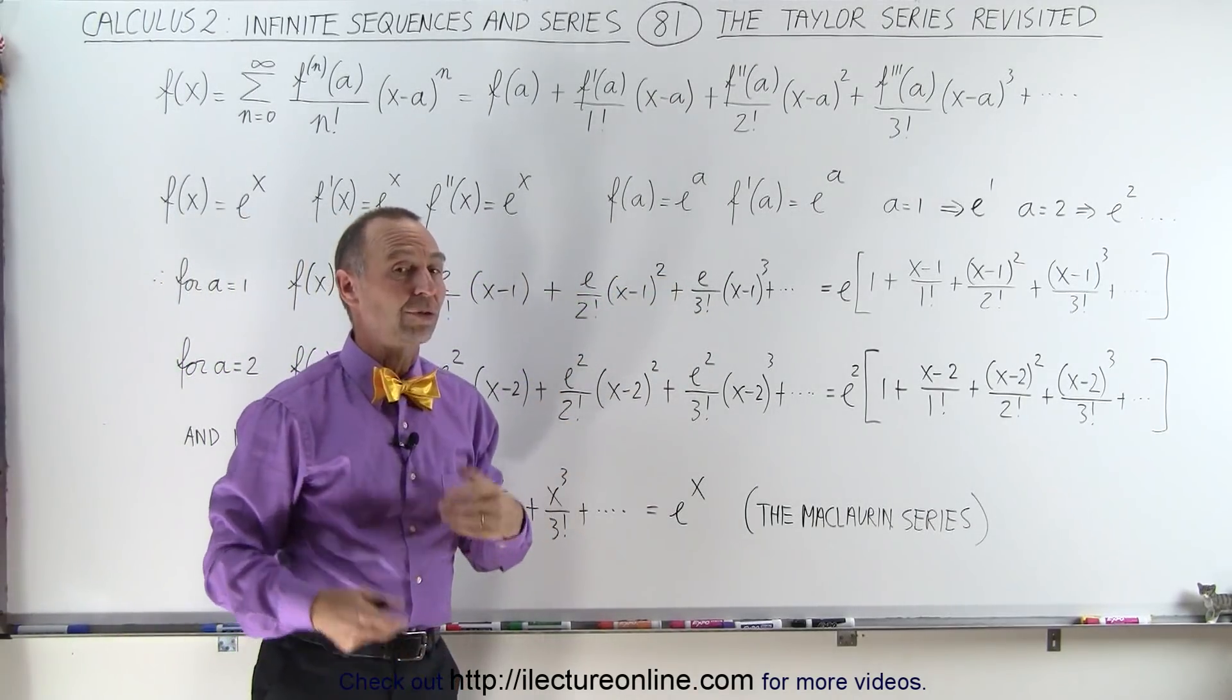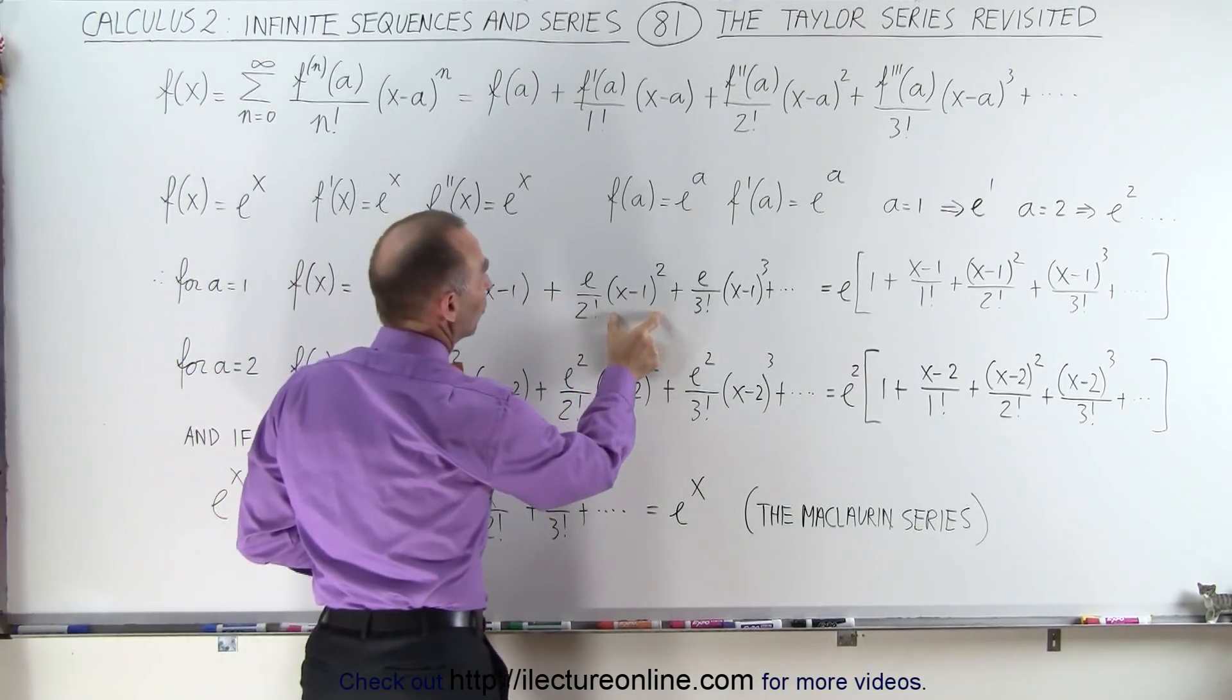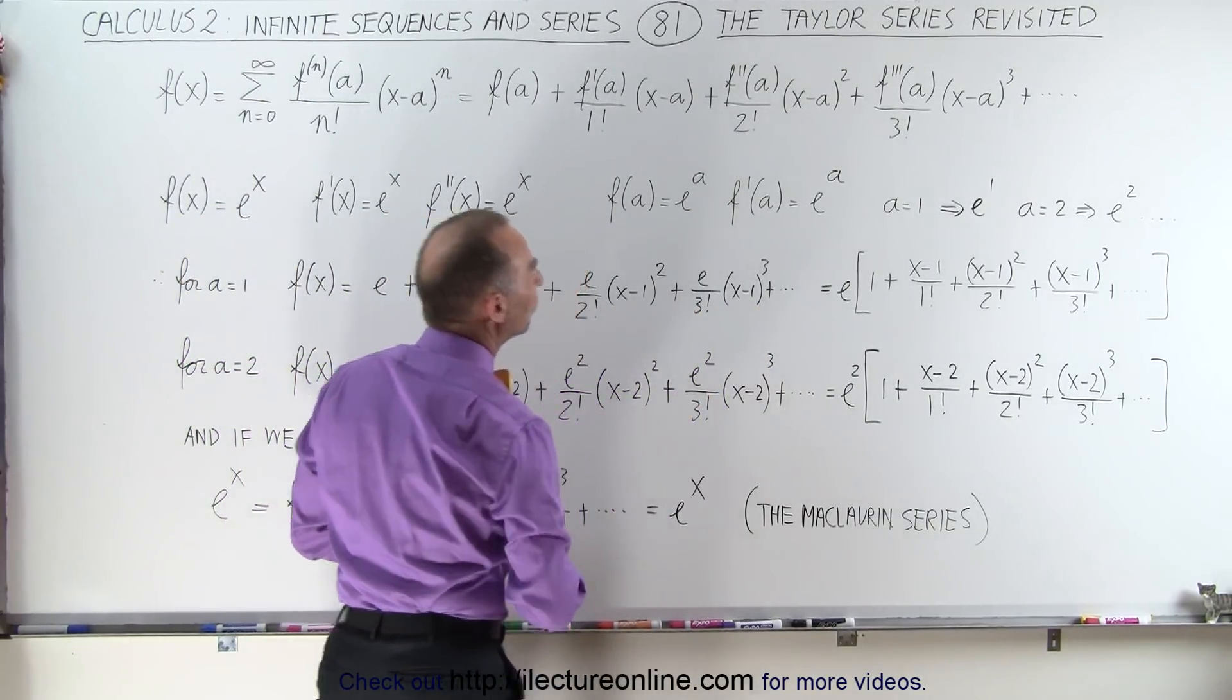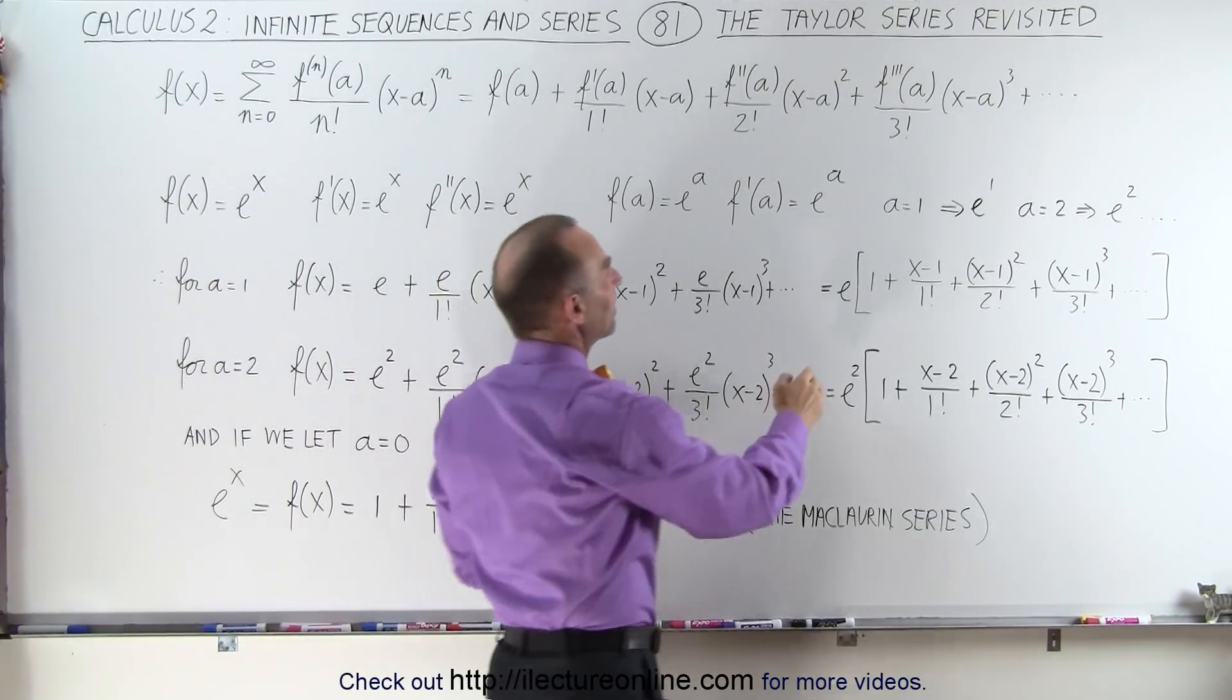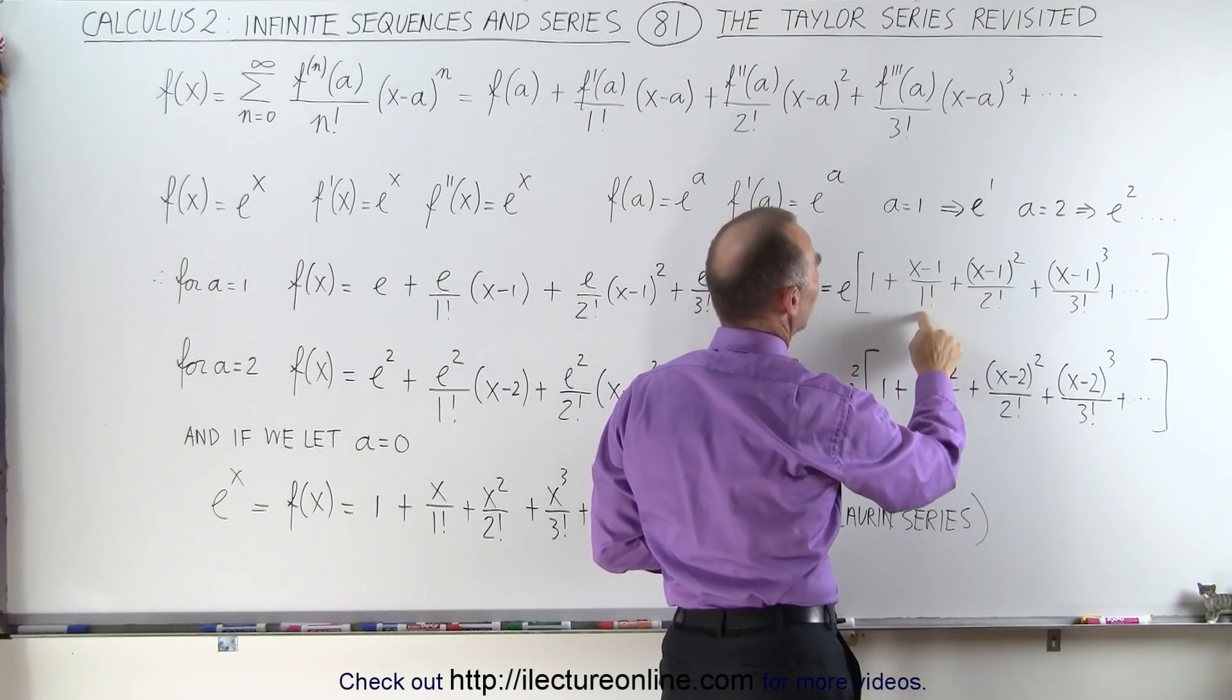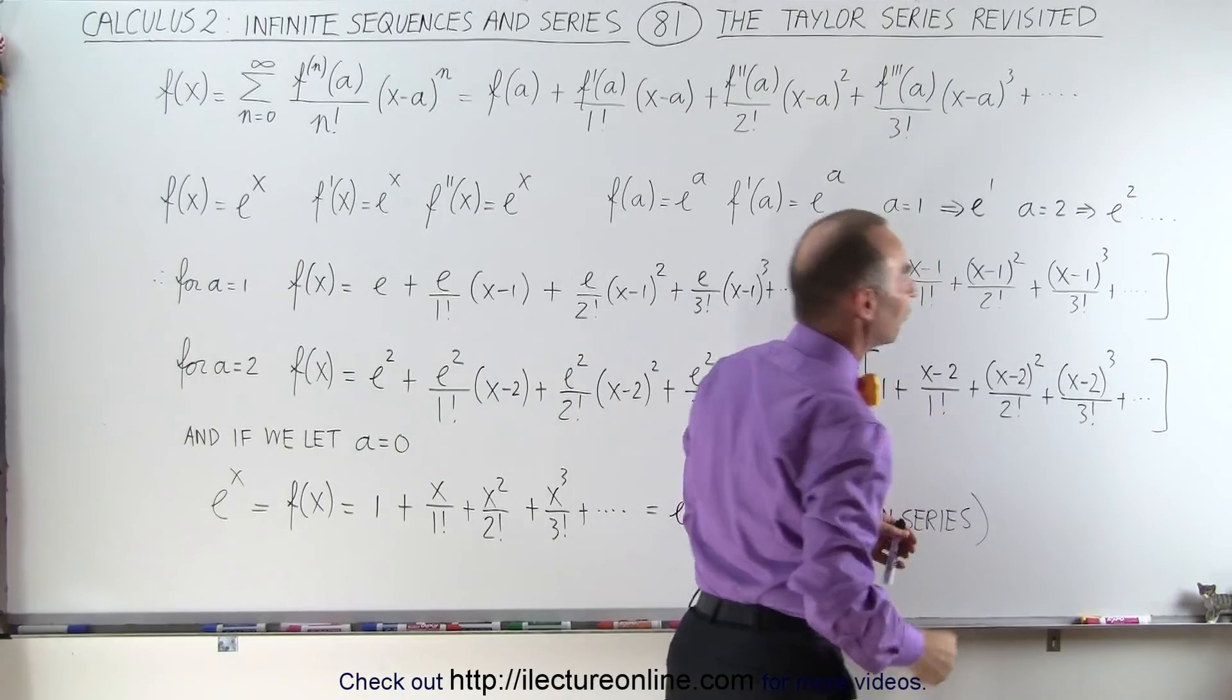And then the variables, we have (x-1), (x-1) squared, (x-1) cubed. If we now factor out an e, then we end up with e times [1 + (x-1)/1! + (x-1)²/2! + (x-1)³/3! + ...].